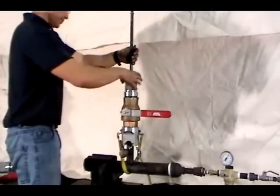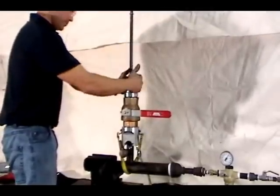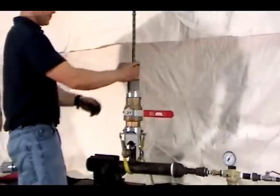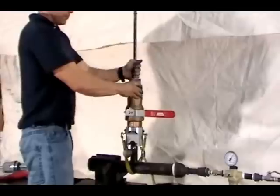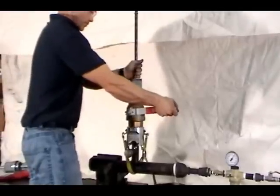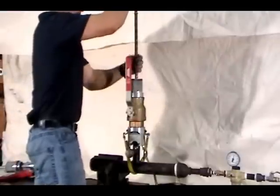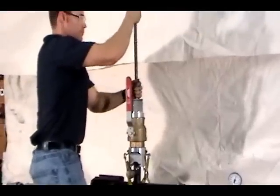Hold the shaft in the fully retracted position with one hand and slowly open the ball valve, taking care to prevent the shaft from moving upwards unexpectedly. Push the shaft down to the reference collar.